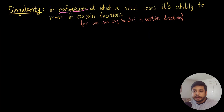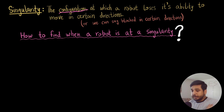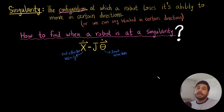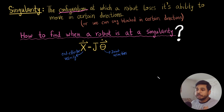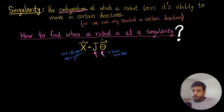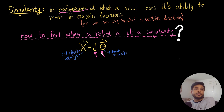So how do we find out when a robot gets to a singularity point? To understand that, let us begin with this equation. We have been dealing with this equation: the Jacobian maps the joint velocities to the end effector velocities. In other words, if you give me any joint velocities, I input them into this equation, multiply by the Jacobian, and I get the end effector velocity.